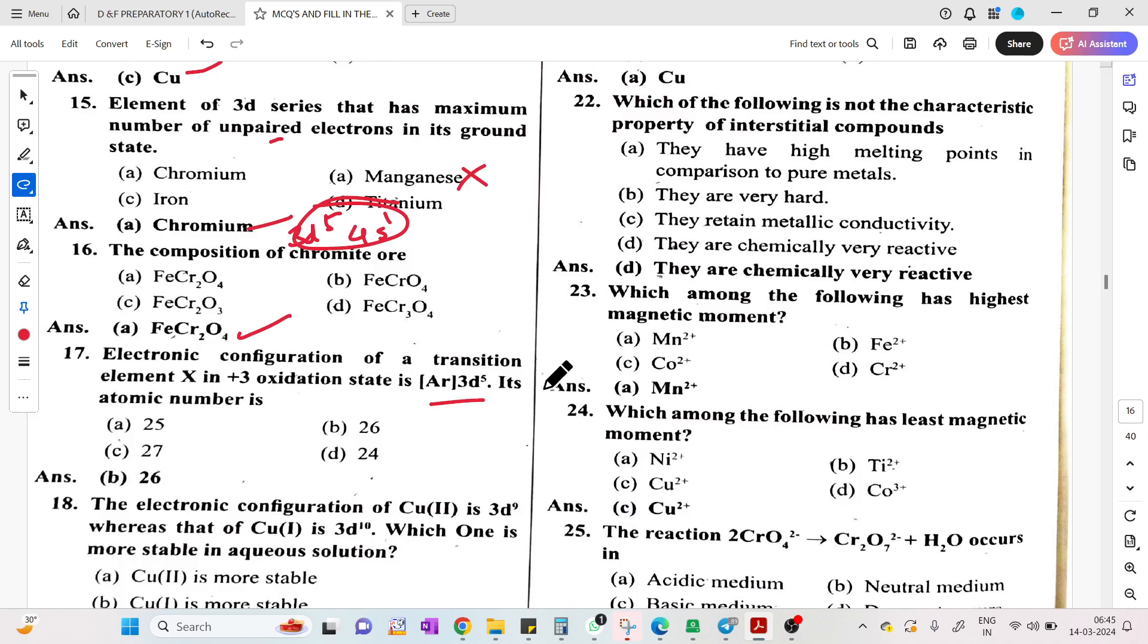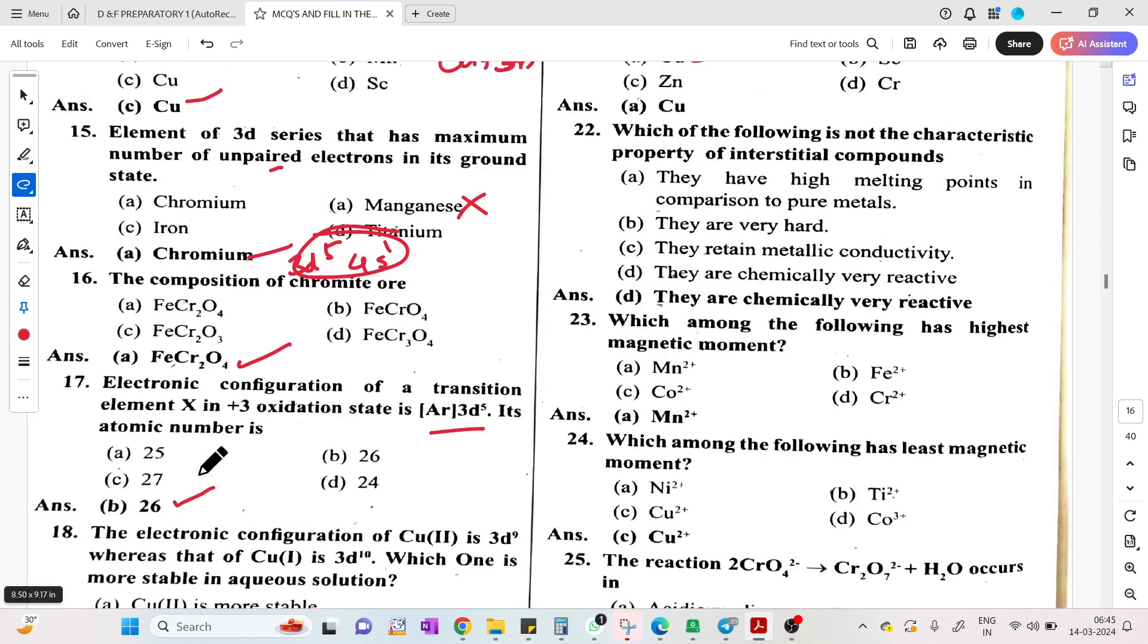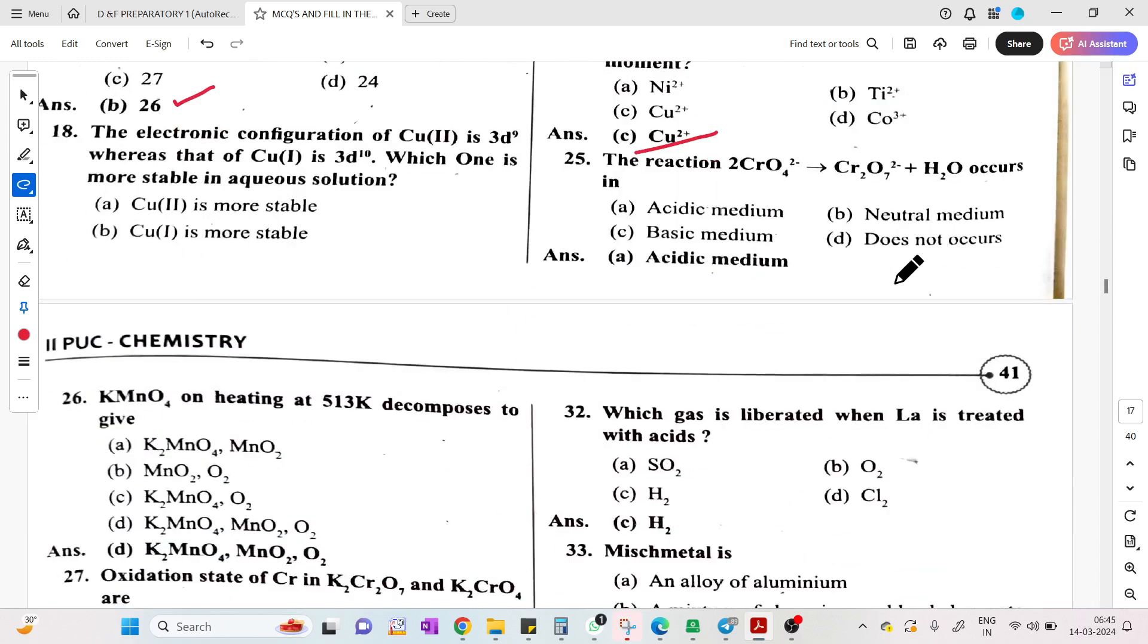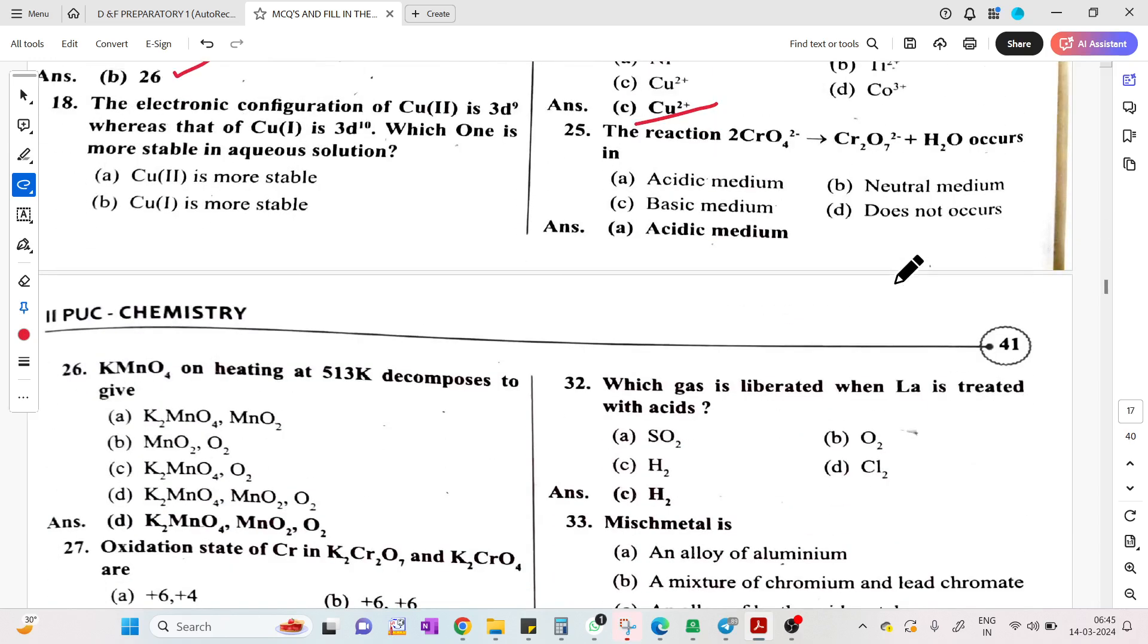Electronic configuration of transition element X in plus 3 state - atomic number is 26. Which of the following is not a characteristic property of transition elements? Answer is D - chemically reactive. Which among the following has highest magnetic moment? Mn2+. Which has least magnetic moment? Cu2+ because there is lesser number of unpaired electrons.